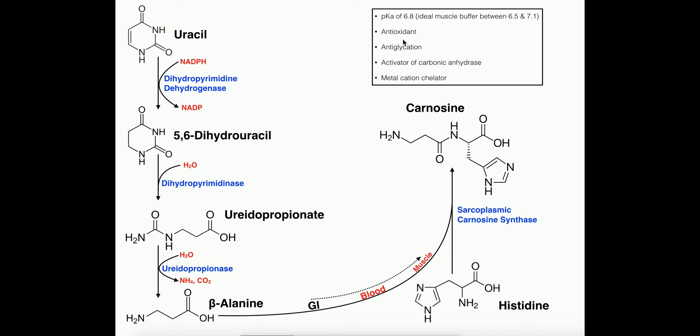The other thing carnosine can do is act as an antioxidant. This histidine imidazole ring right here can actually accept and donate single electrons from free radicals such as hydrogen peroxide, superoxide, or hydroxyl radicals. This imidazole ring can pick those up and quench them so they won't cause as much oxidative damage in the cell, occurring both in the blood and mostly in the muscle.